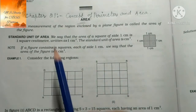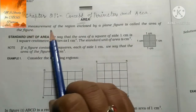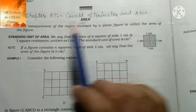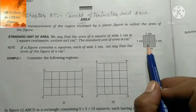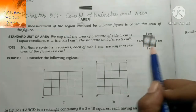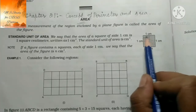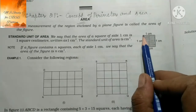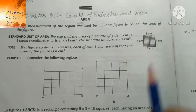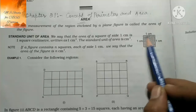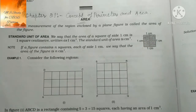So Area क्या होता है? The measurement of the region enclosed by a plain figure is called the area of the figure. यानि कि figure जो दिया है, इसके अंदर जो भी है - यह इस figure का area है। Because यह इसकी boundary से bound है, यानि कि इसकी sides से bound कर रखा है। तो अंदर का जो भी place है, वो यहां का area है। ठीक है।